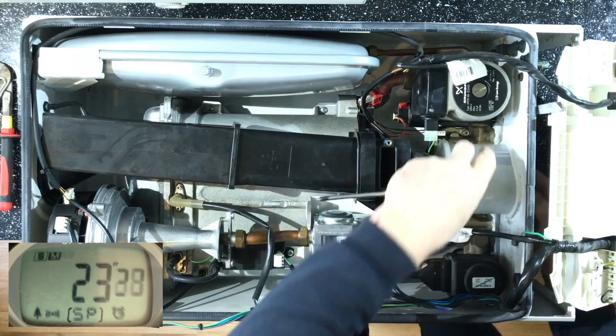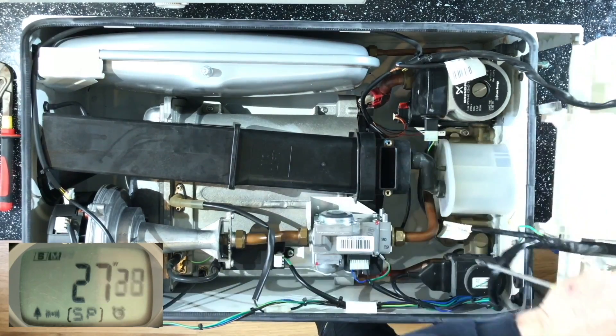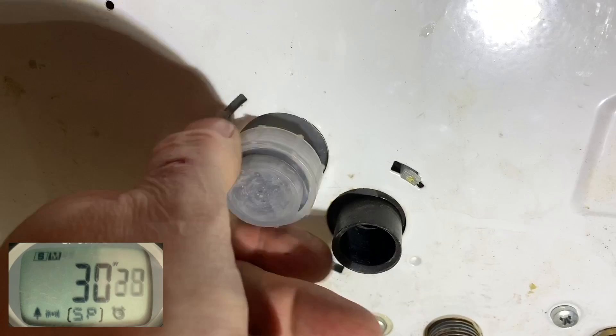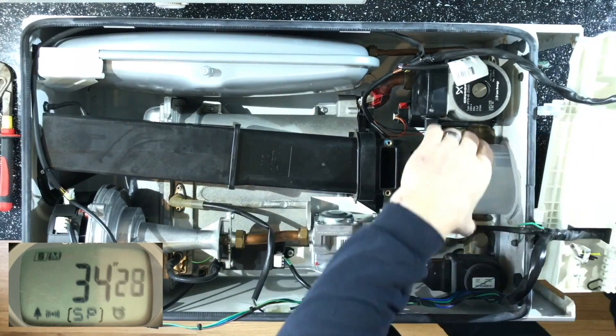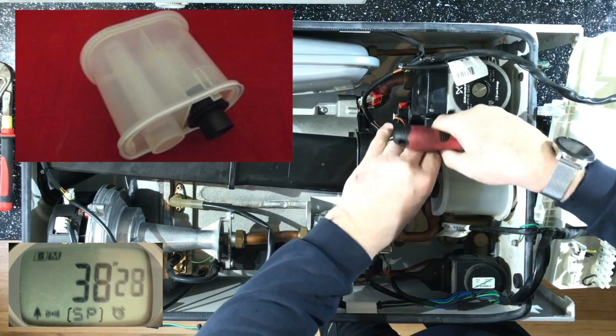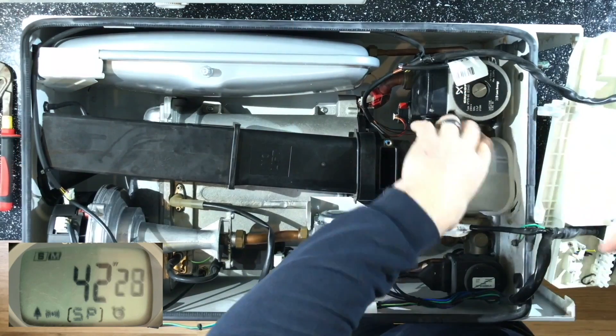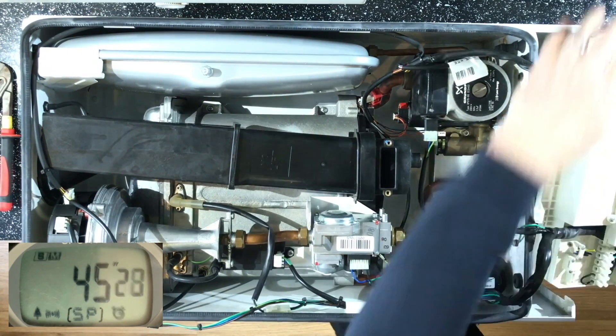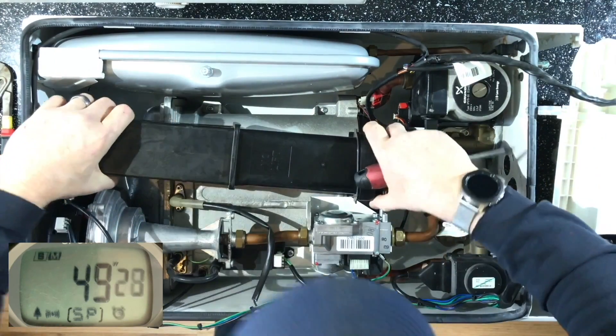The next thing I'm removing is the condensate trap. Now this is one of the old traps, and it has a retaining nut on the bottom here which I'm taking off, which holds the condensate trap in position. In the new ones, this doesn't exist now, it's just a plastic cover which is molded into the trap itself. Now I can start taking off this manifold.